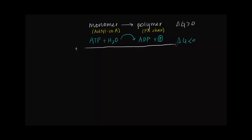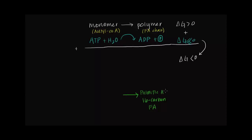To make this clear, this reaction needs a favorable delta G value. Overall it will have a negative delta G, because the hydrolysis of ATP is much more negative than the polymerization reaction is positive. Adding these two delta G values gives an overall negative delta G. The product we're writing the overall reaction for is a 16-carbon fatty acid called palmitic acid.